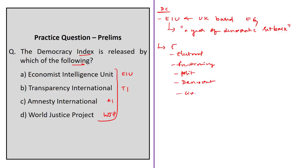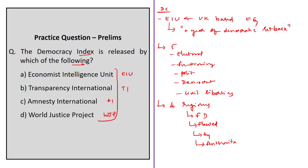Each country's score is calculated on a scale of 0 to 10, and countries are classified into four regime types: full democracy, flawed democracy, hybrid regime, or authoritarian regime. Based on the Democracy Index, India is positioned 51st out of 167 countries with a score of 6.90, categorized as a flawed democracy. The answer to this question is Option A — Economist Intelligence Unit. Note that Transparency International releases the Corruption Perception Index, and the World Justice Project releases the Rule of Law Index.